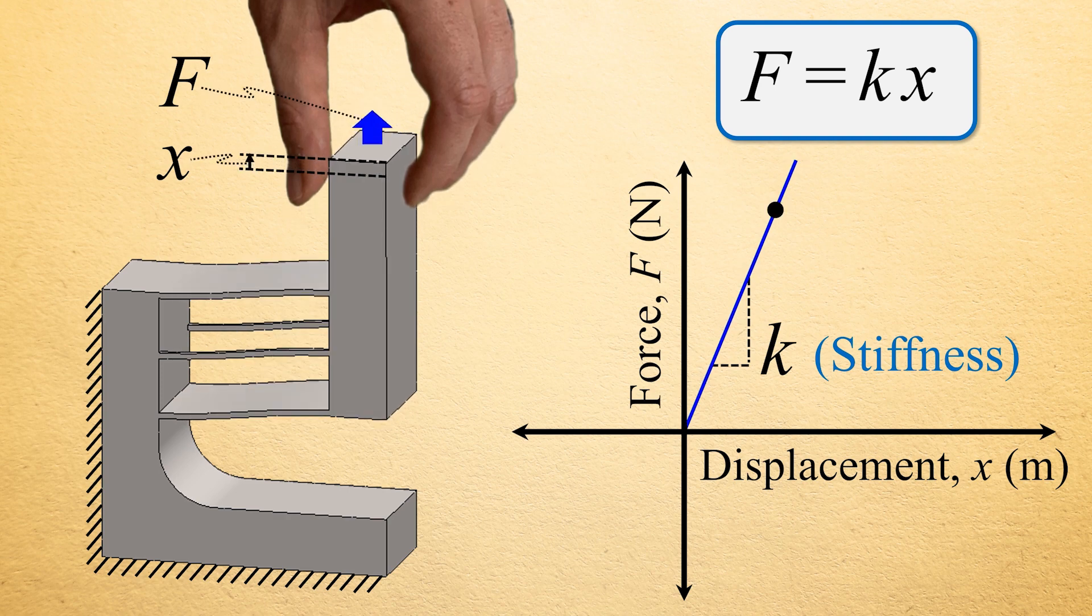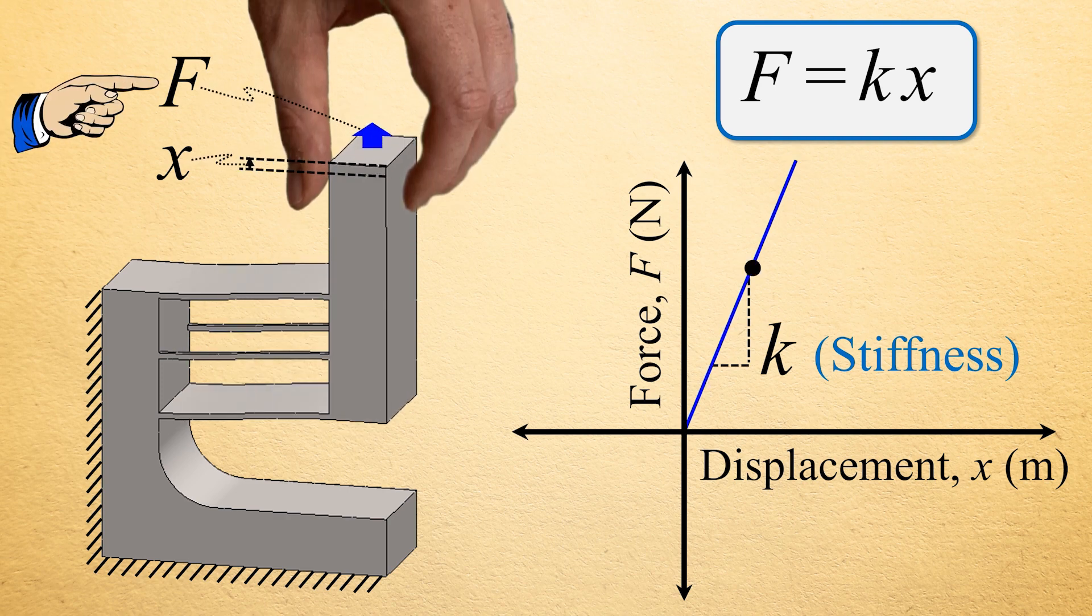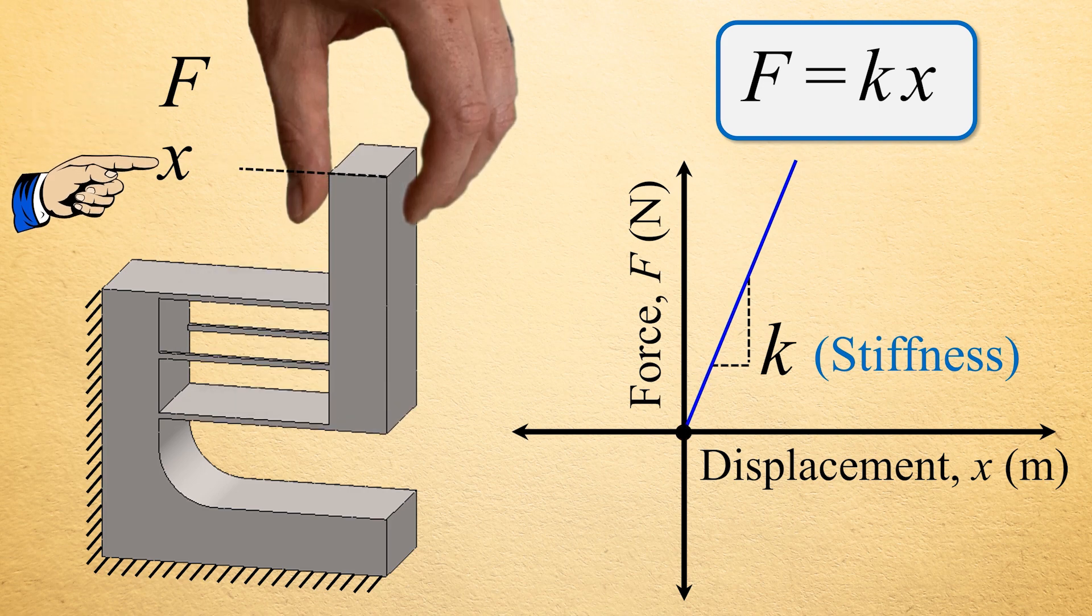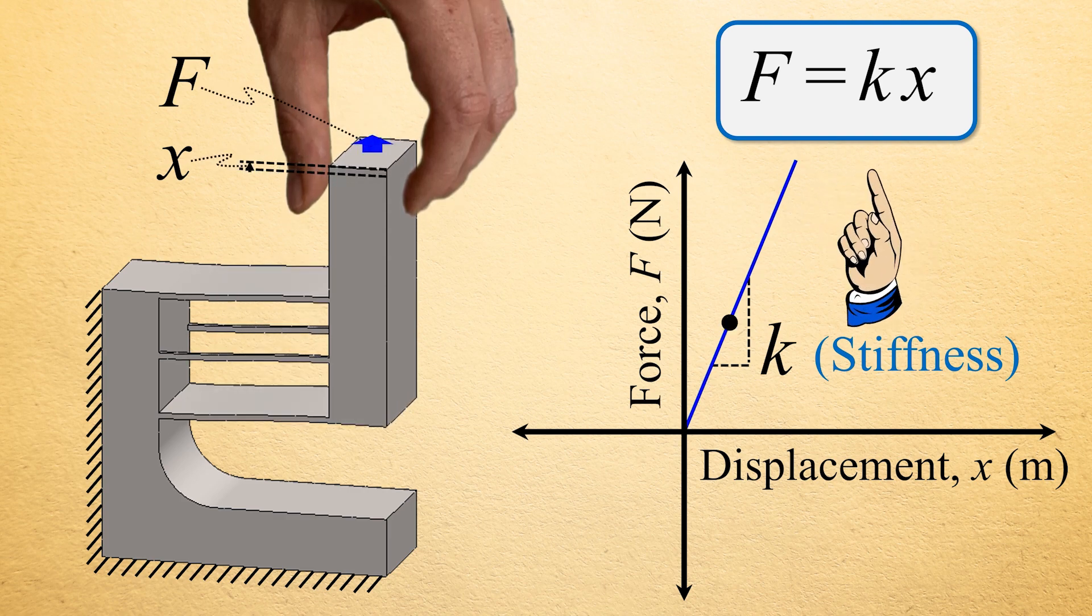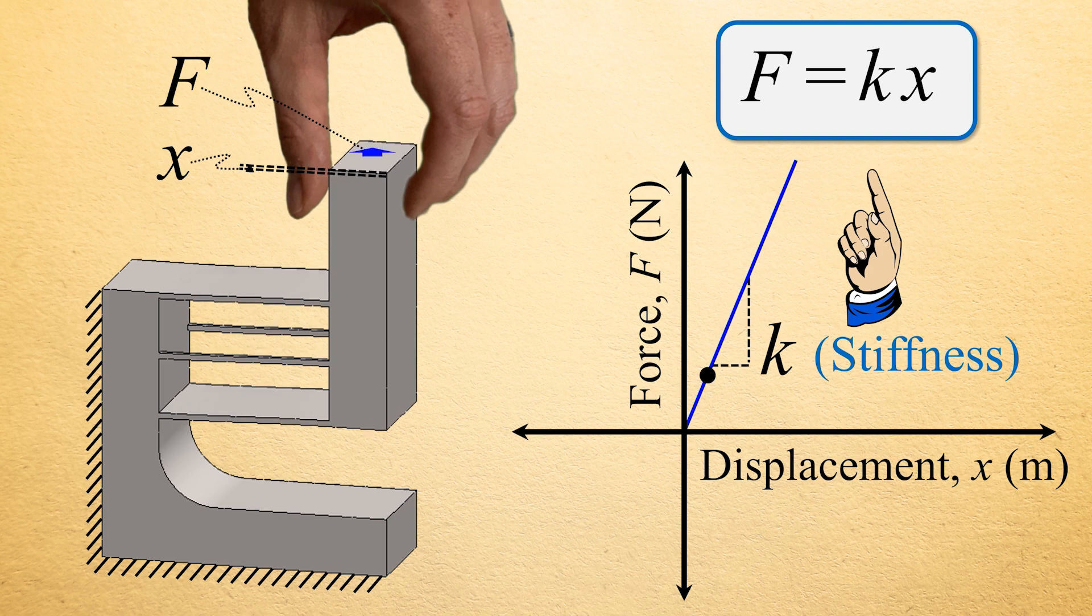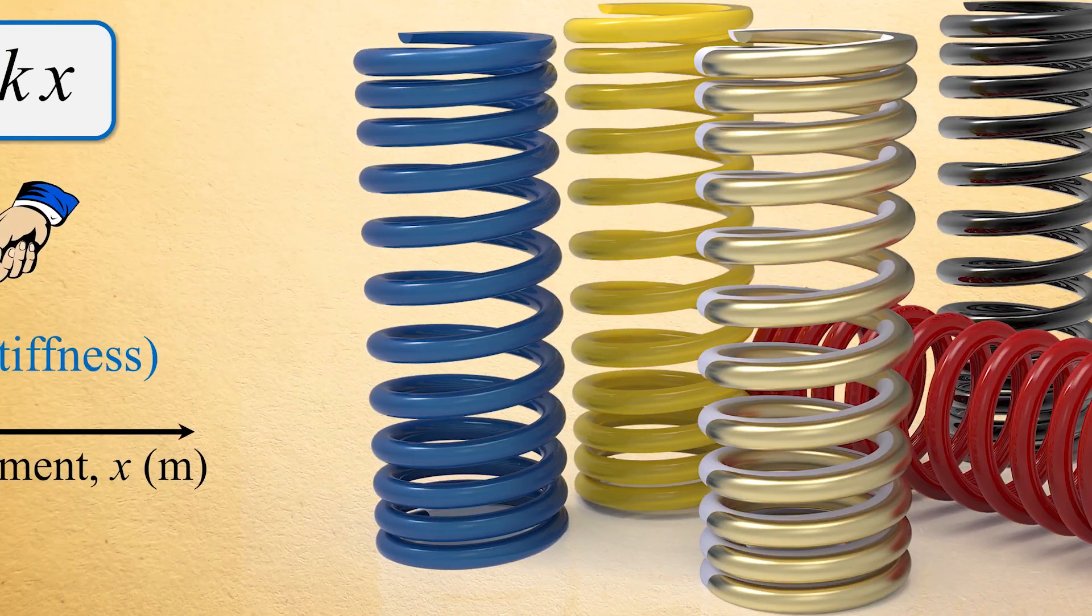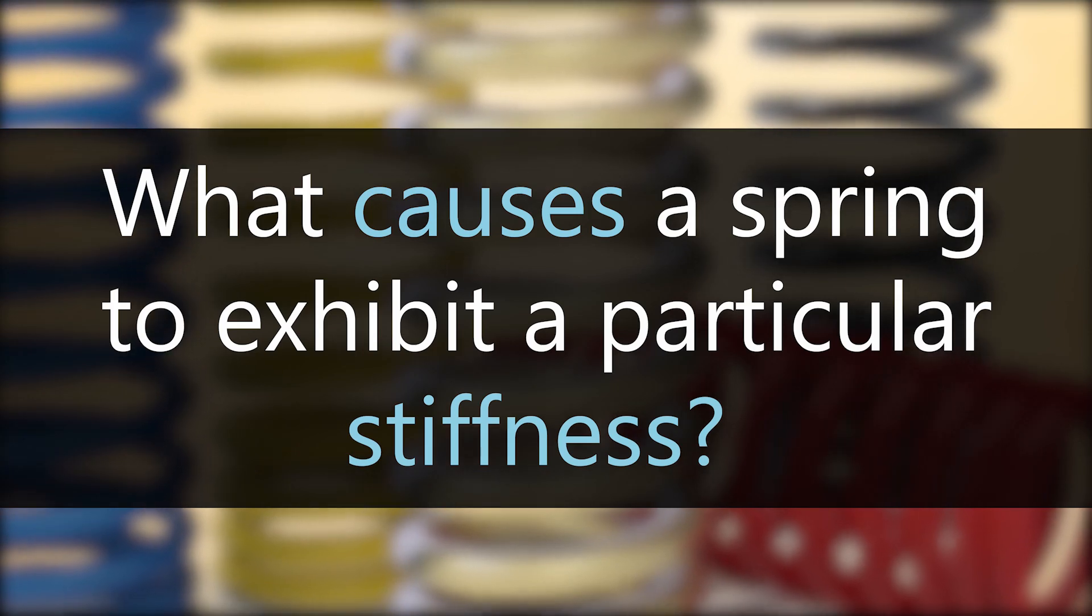that when you slowly load a linear spring with a force F in the absence of any other forces, the spring will displace a distance X along a straight-line force displacement plot according to the function F equals K multiplied by X, where the slope of the plot's line is the spring's stiffness K. But what causes a spring to exhibit a particular stiffness anyway?